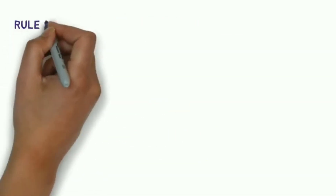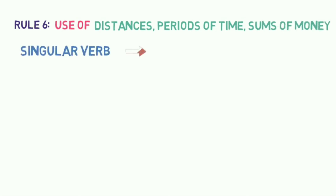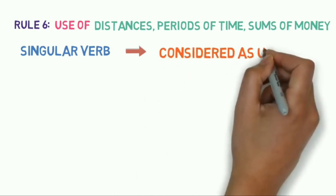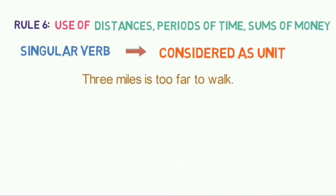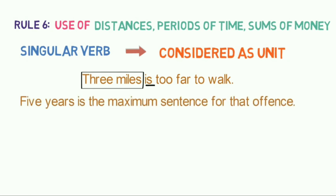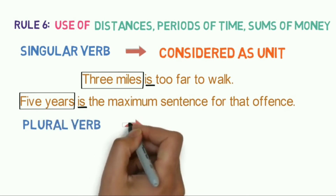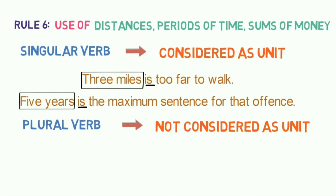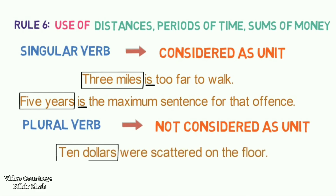Rule 6: Use of distances, periods of time, and sums of money. We use a singular verb with distances, periods of time, sums of money, etc. when considered as a unit. For example: '3 miles is too far to walk.' We use 'IS' because 3 miles is treated as a single unit. '5 years is the maximum sentence for that offense.' We use 'IS' as 5 years is considered a single unit. Exception: '10 dollars were scattered on the floor.' Here we use the plural verb 'WERE' because the dollars are not considered as a single unit.